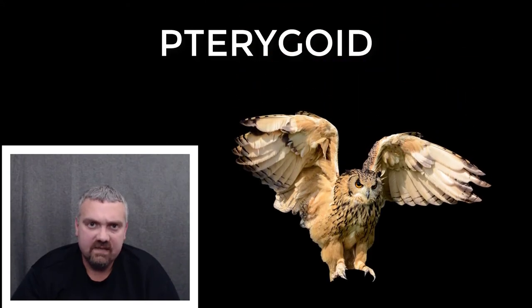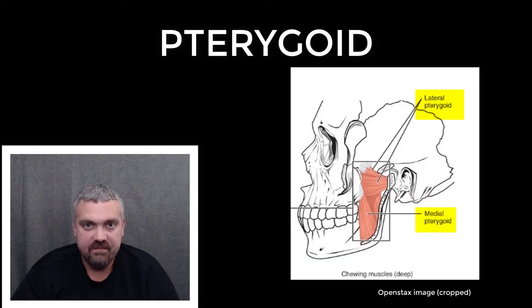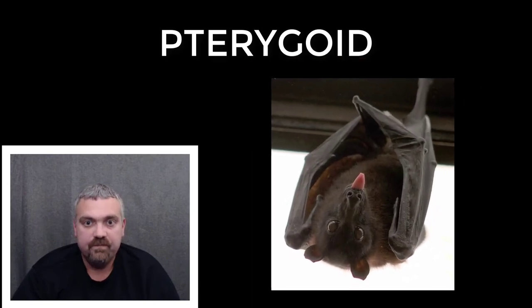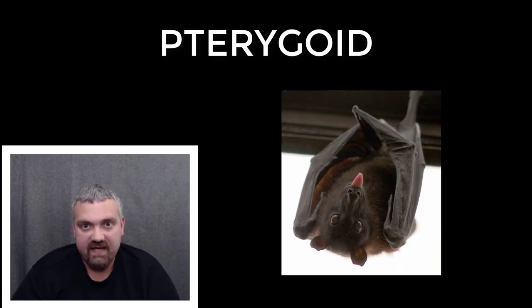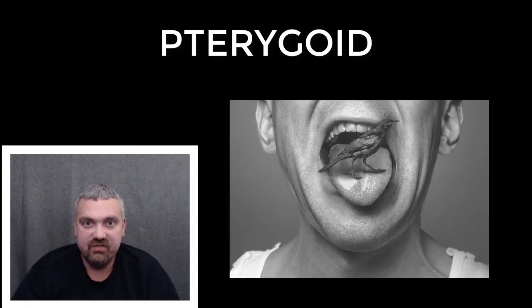And lastly, we have pterygoid. Pterygoid means wing-like. I spent a few years working with patients with TMJ, or temporomandibular joint dysfunction, so I spent a lot of time working on the pterygoid muscles. The term wing-like describes their appearance, but also the fact that they come from the sphenoid bone, which is a wing-like bone as well. Pterygoid means wing-like, and these are muscles inside your mouth that help control the movement of the jaw.